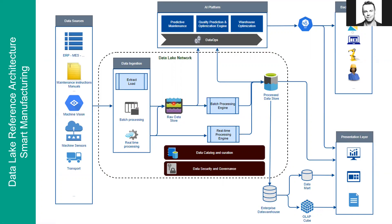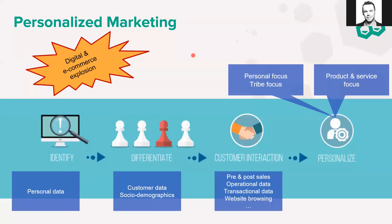ERP systems use batch processing; machine vision and sensor data use the real-time processing stream. We have the raw data store with a reference to our data catalog, and people build solutions around predictive maintenance, warehouse optimization, and other applications with integrations to back-end systems. The data lake structure itself stays the same — marketing or HR data coming in is consumable by others in the organization.